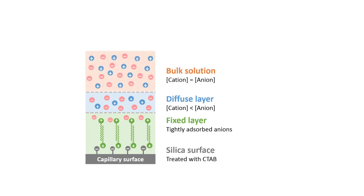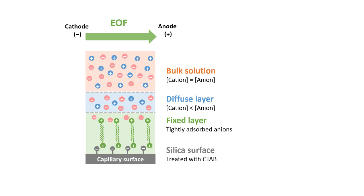This makes the capillary surface positively charged, thereby forming a fixed layer and a diffuse layer that has a higher concentration of anions than cations. As a result, when the negative voltage is applied, the anion-rich diffuse layer will be attracted towards the positively charged anode, dragging the bulk solution together. In other words, the electro-osmotic flow is reversed.